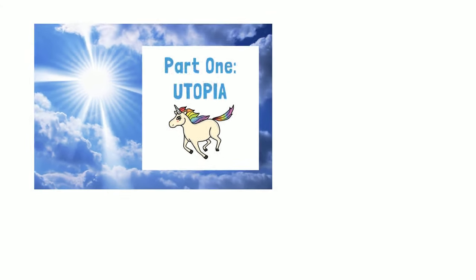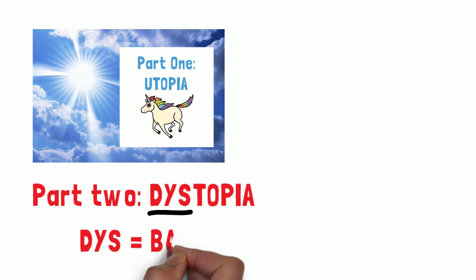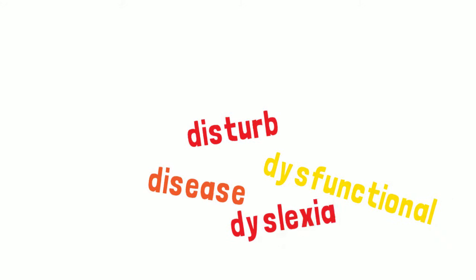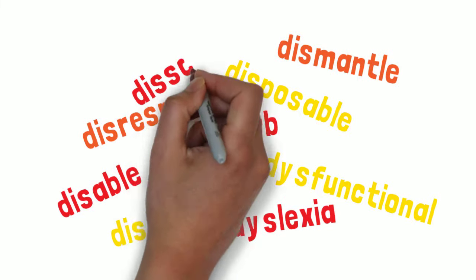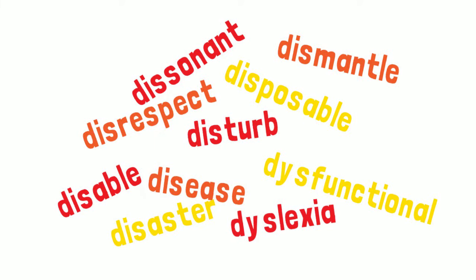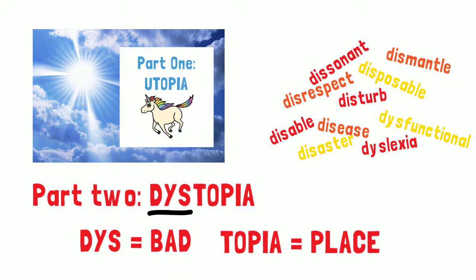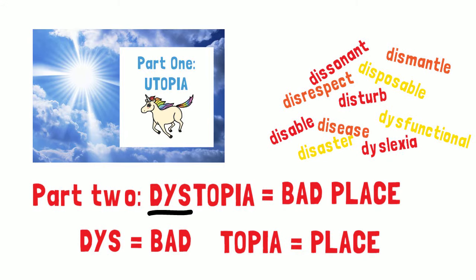This brings us to dystopia. It's another invented word using the prefix 'dis,' which means bad. There are many words that start with 'dis,' and they all have negative connotations: disturb, disease, dysfunctional, dyslexia, dismantle, disaster, disable, disrespect, disposable. With dystopia, we have 'dis' combined with the Greek word 'topia,' which means place. So a dystopia is a bad place, and that's the opposite of a utopia.